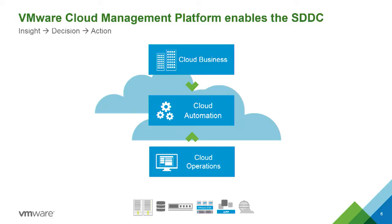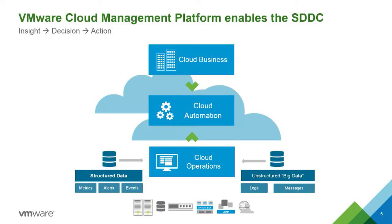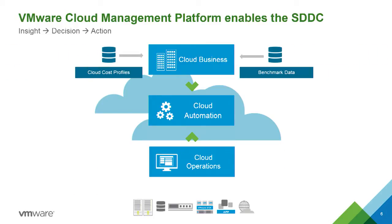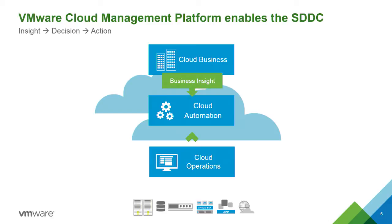These two things kind of come together. Ops works off of structured data — structured data may come from events, alarms, et cetera, coming from your compute, storage, and networking — your underlying infrastructure fabric. You also get unstructured data, which is coming from gigabytes of log files being generated by your applications. And on the business side, you've got your cost profiles, and these two things drive the automation.